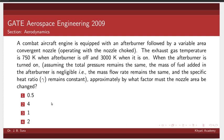A combat aircraft engine is equipped with an afterburner followed by a variable area convergent nozzle operating with the nozzle choked. The exhaust gas temperature is 750 kelvin when afterburner is off and 3000 kelvin when it is on.